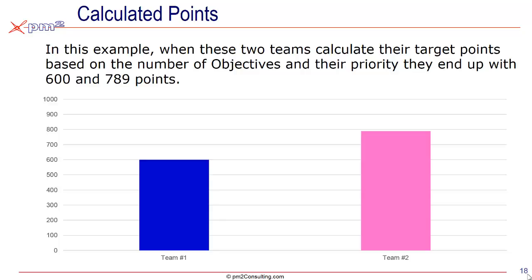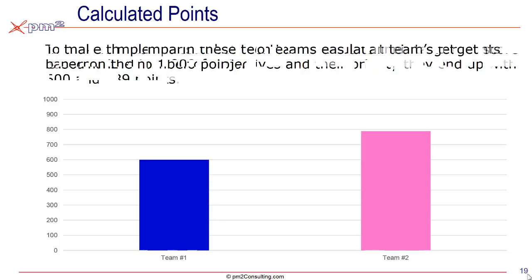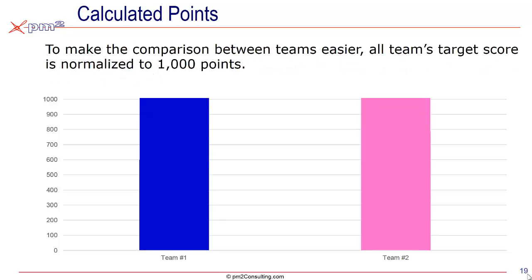Now, technically that's correct, but in the bigger picture, if these two teams are roughly the same size with roughly the same expectations over the course of a year as opposed to a quarter, it's unfair to be looking at them based on these two different sets of points. So all we do is normalize them up to 1,000 points, so each of those teams starts off the game with the availability of earning 1,000 points.